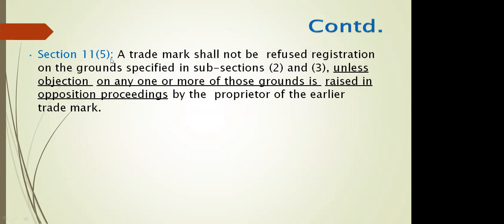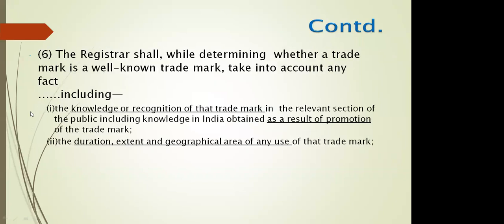A trademark cannot be refused unless those grounds of refusal are raised in the opposition proceedings by the proprietor of the earlier trademark. If someone has already objected to the use of your prospective trademark, you will have to show ways and means as to how your trademark is different, distinctive, and descriptive from that particular goods and services. In all such questions of confusion, the Registrar is the one who will identify whether the trademark is coming under absolute grounds of rejection or relative grounds of refusal.